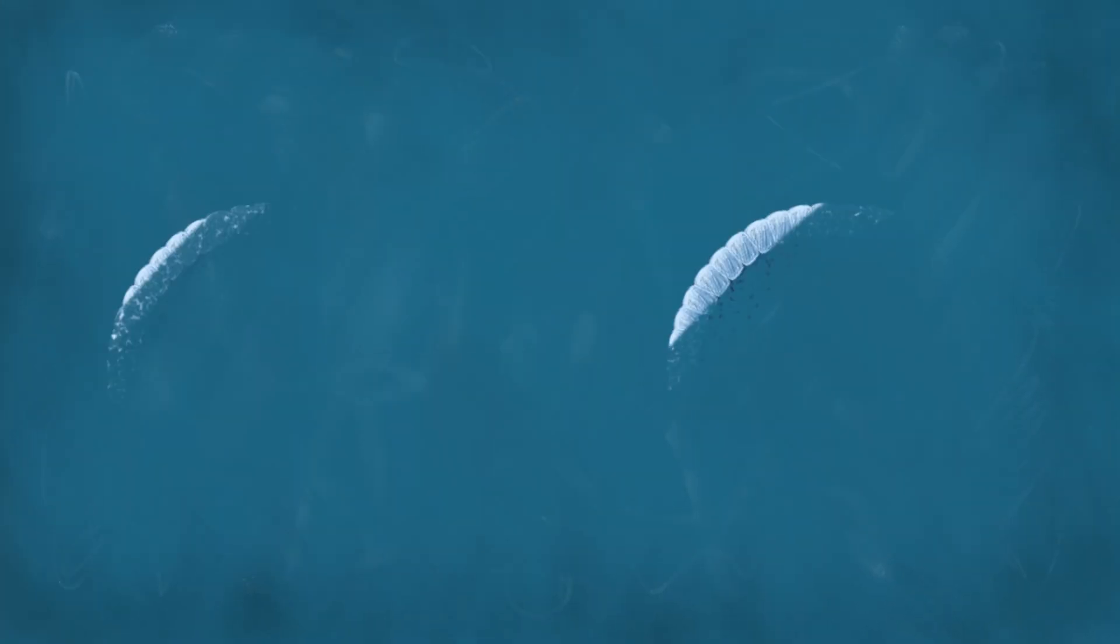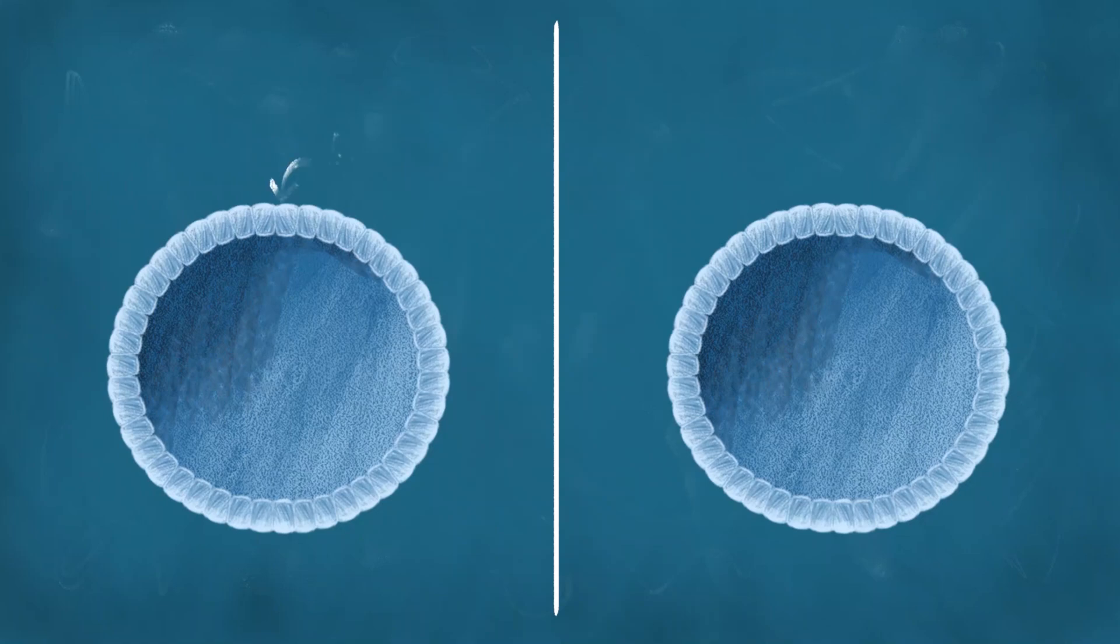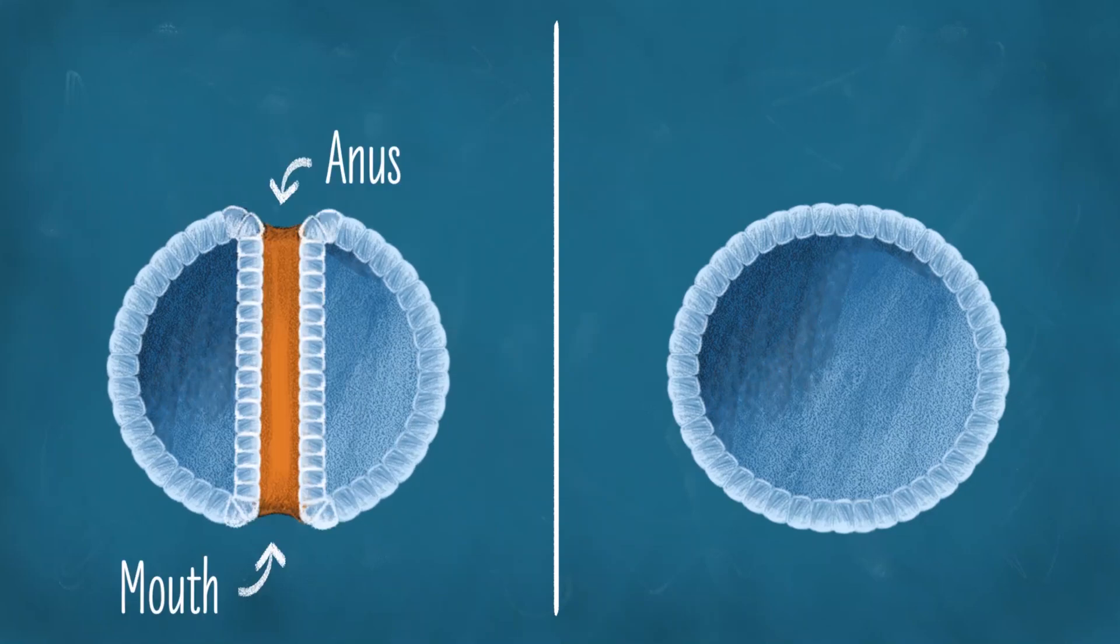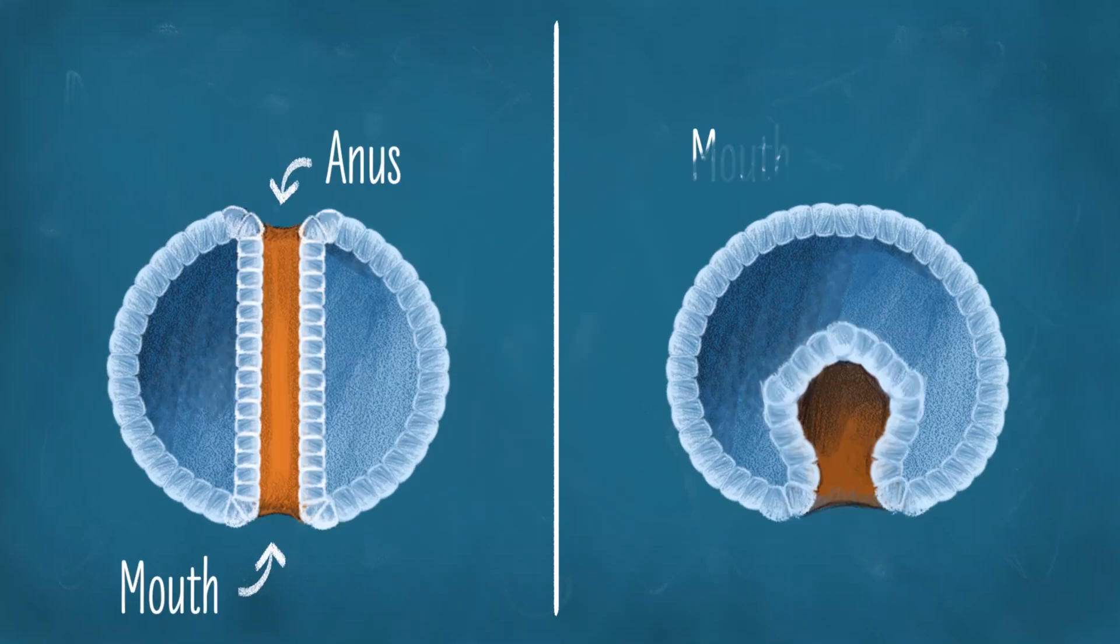Now I should mention that there are two ways that you can make a mouth and an anus by pushing through a ball of cells. One way is to start at the mouth and end at the anus. The other way is to start at the anus and end at the mouth.